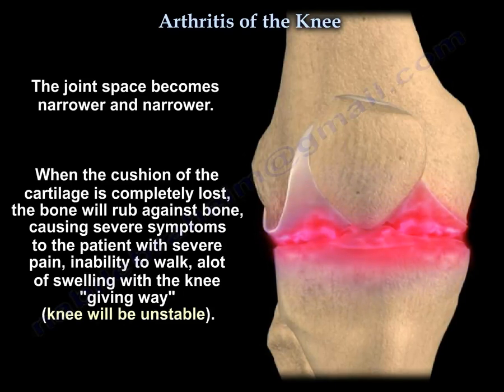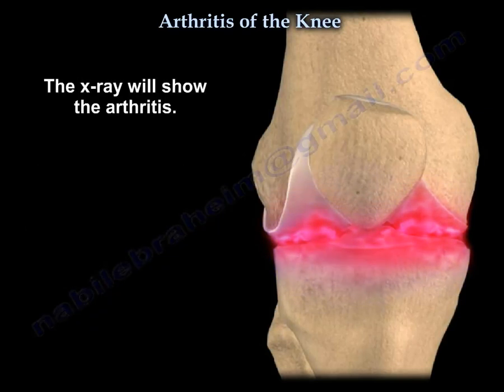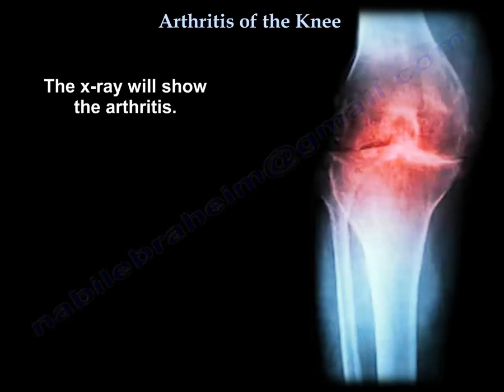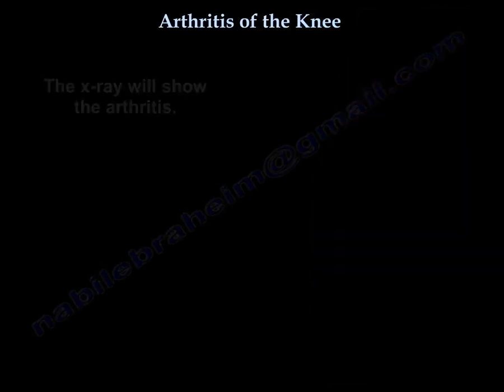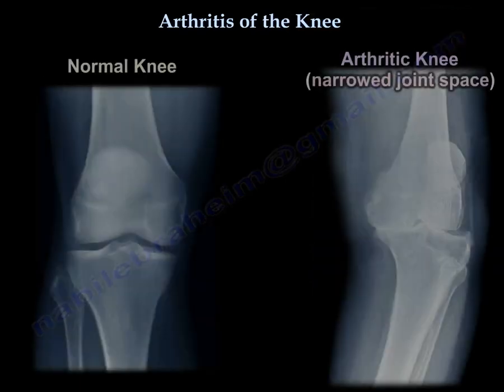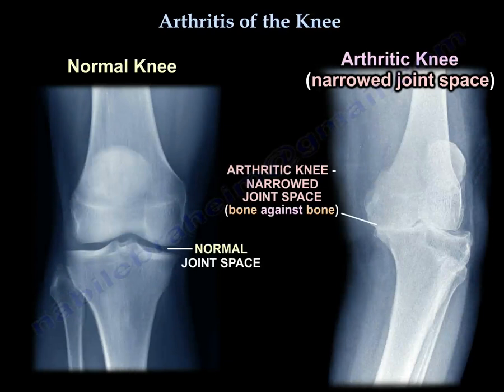With severe pain, inability to walk, a lot of swelling, and the knee will give away — the knee will be unstable. The x-ray will show the arthritis. Here is a normal knee showing the normal joint space, and here is a knee with arthritis that shows severe arthritis of the knee and bone rubbing against bone.